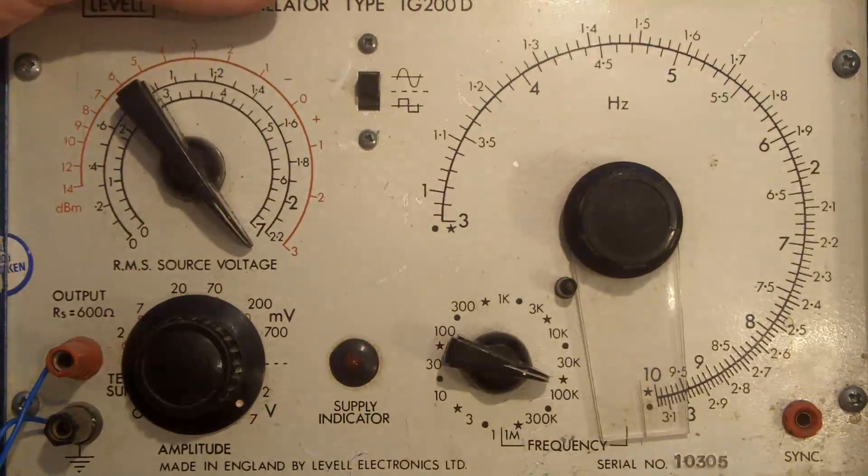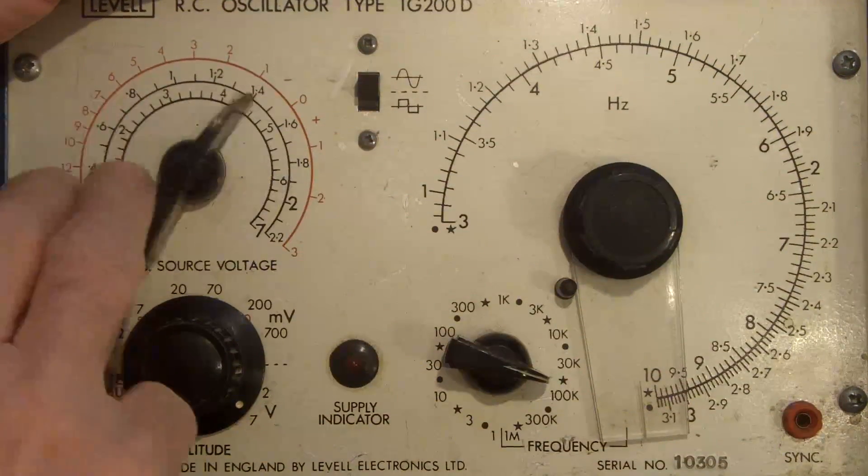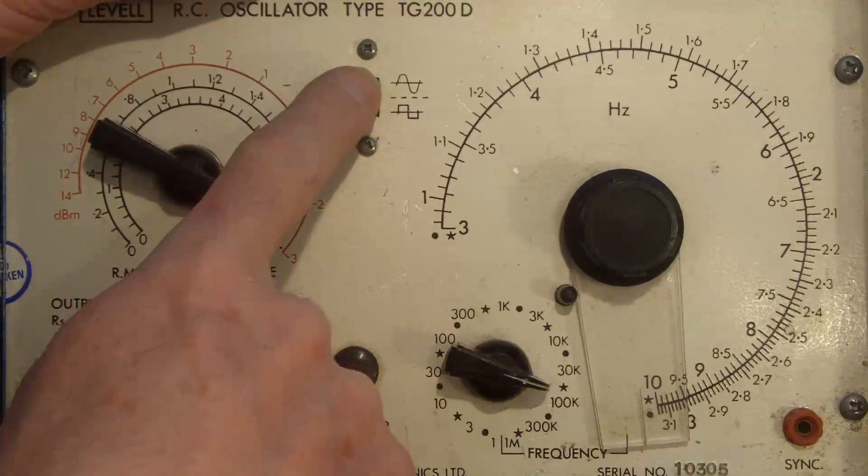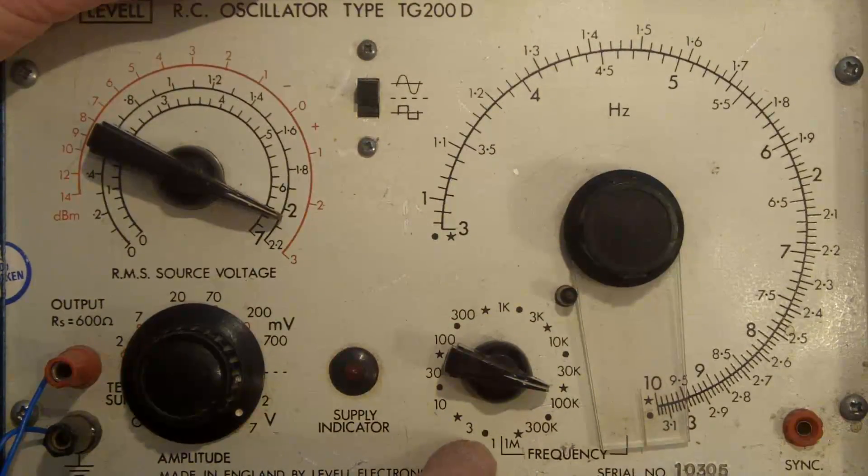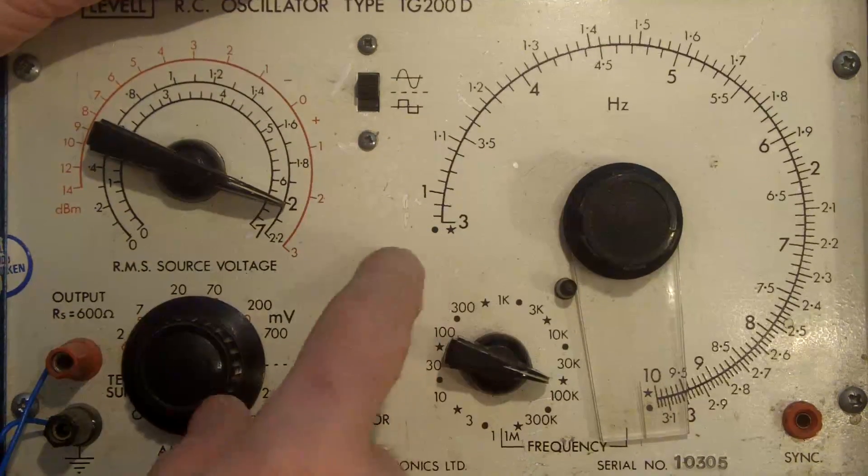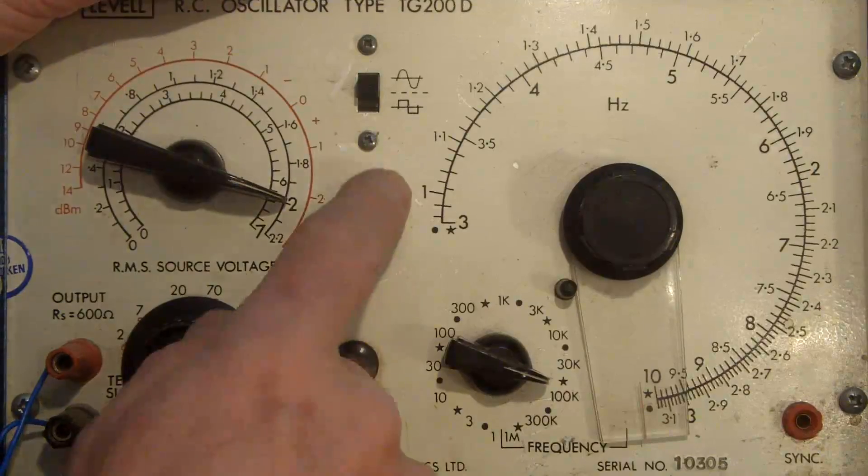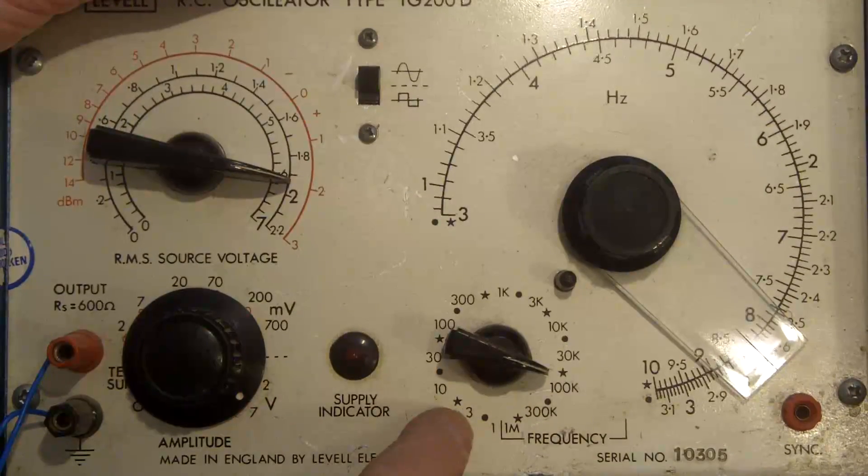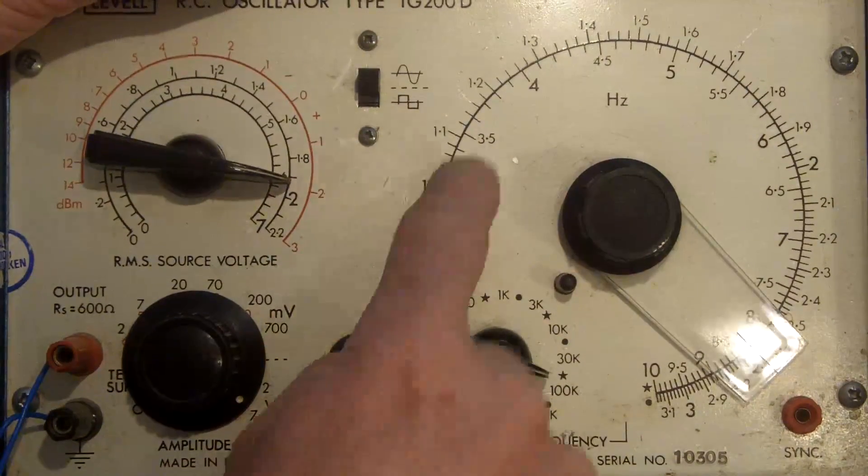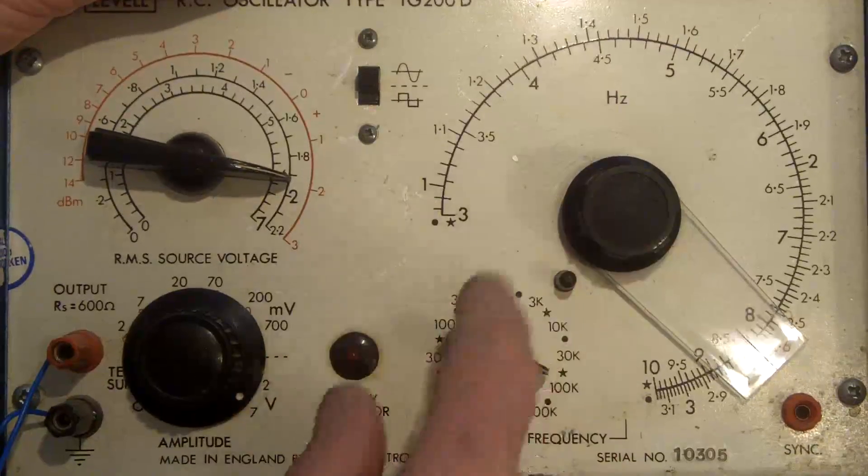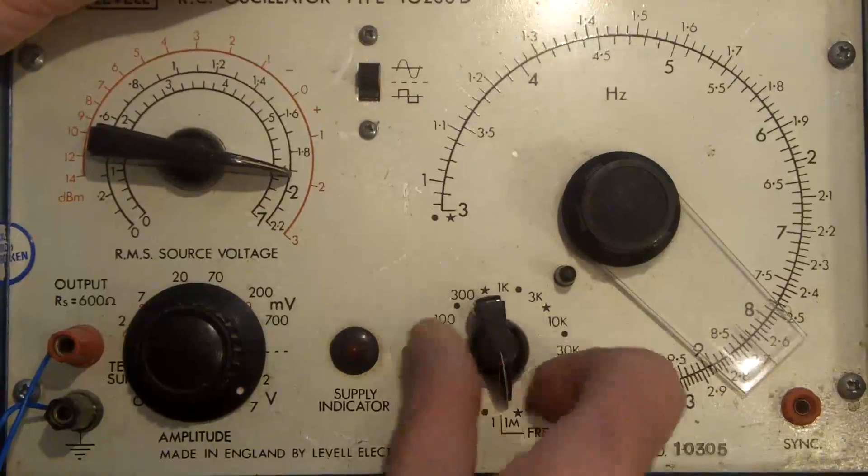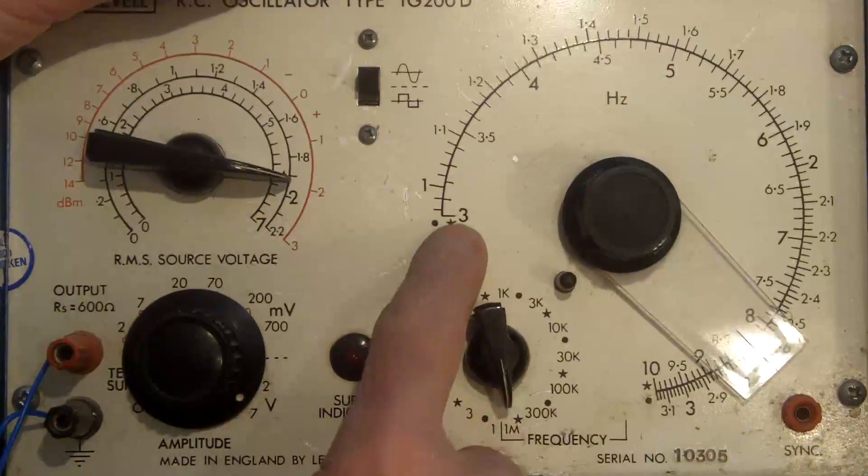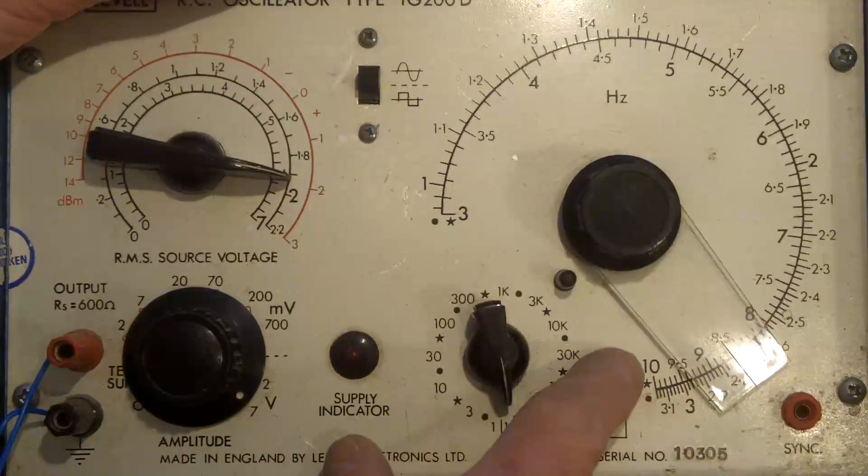This is the signal generator I'll be using today. We've got a voltage output level control. We can switch from sine wave to square wave and then it covers the ranges in sort of two steps - 1 to 3, then 3 to 10 on the inner scale. That goes in hertz and kilohertz and goes up to the maximum here which is 300 kilohertz to 1 meg.